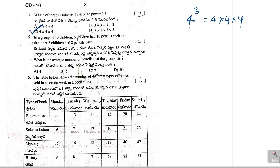Next, fifth one. In a group of 10 children, 5 children had 10 pencils each and the other 5 children had 8 pencils each. What is the average number of pencils that the group has? Average means we need to find the mean. In the first part, 5 children had 10 pencils. Total pencils will be 5 times 10 which is equal to 50. Then, 5 children had 8 pencils. Total pencils will be 5 times 8 which is equal to 40. So, the total will be 90. The average will be 90 by 10 which is equal to 9. So, option C is correct.